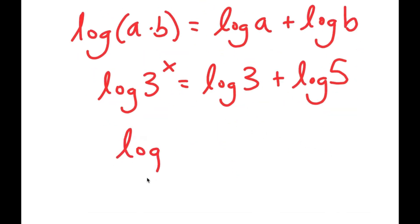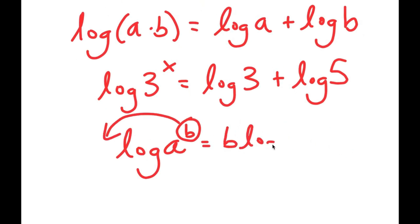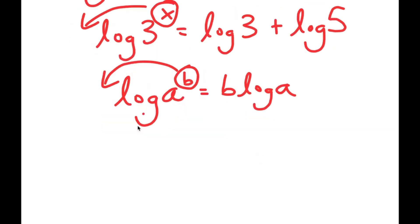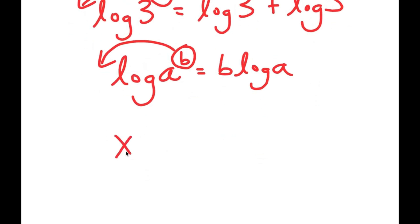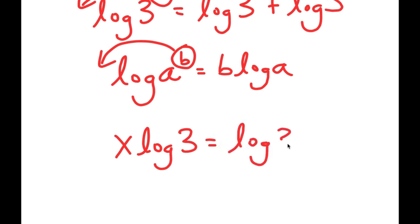And if I have something in the form log a to the power of b, I can move b to the front, so I get b times log a. So log 3 to the power of x, I can move this to the front, and I get x times log 3 is equal to log 3 plus log 5.